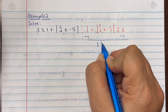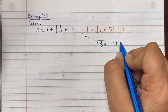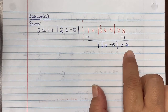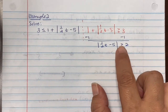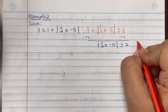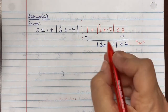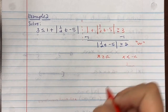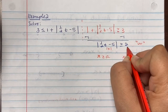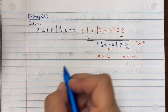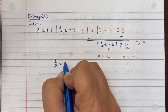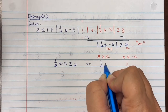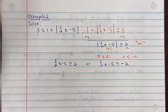Now isolate the absolute value by subtracting 1, giving absolute value of one-half t minus 5 greater than or equal to 2. Since the absolute value is greater than or equal to a positive value, this is our 'or' statement. We write: one-half t minus 5 greater than or equal to 2, or one-half t minus 5 less than or equal to negative 2.